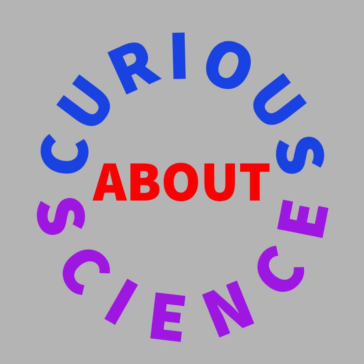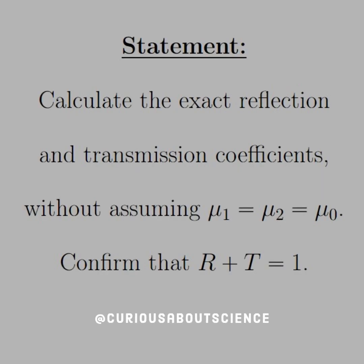By now we've gotten our hands dirty with a lot of these questions. Our next big one is to calculate the exact reflection and transmission coefficients without assuming that μ₁ equals μ₂ equals μ₀. And we need to confirm that R plus T equals 1 — that is, reflection plus transmission equals 1.